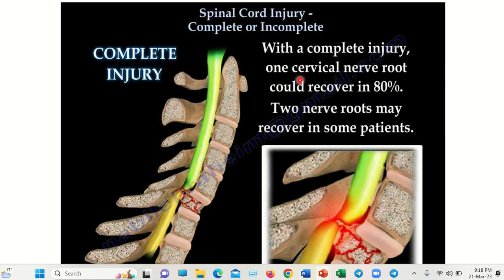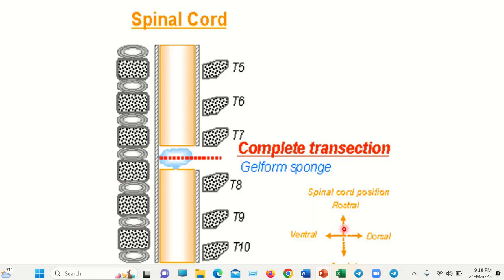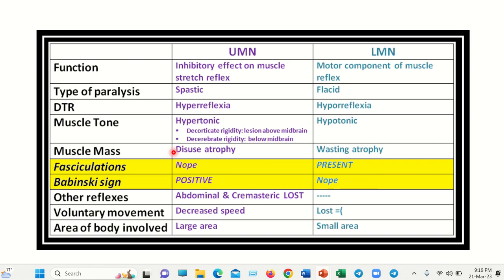With a complete spinal cord injury — cervical root or any other root — it recovers 80%, and up to two nerve roots may recover in some patients. But that is not our main concern here. Our main concern is the transection of the nerve. Here we can see the spinal cord and this is the complete transection, showing the upper motor neuron and lower motor neuron relationship.